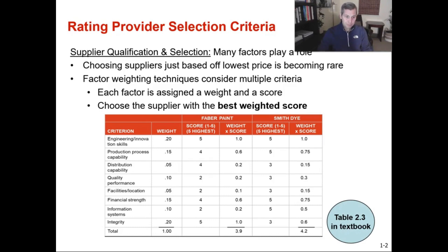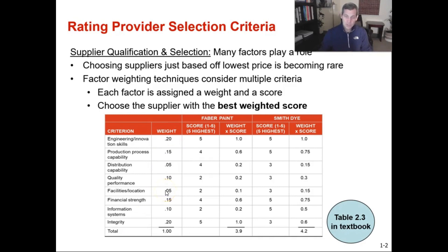We picked the criteria that was important to us on the far left, then we assigned a weighting determined by key stakeholders. Quality was the most important to them — as a health system, that's good. Cost came next, and then a couple of other factors. All of those weights add up to 100%. You put your criteria on the far left, your weight right next to that, and then you get a group of people together and determine a score for that supplier. Not everyone agrees, so we took a poll across the 15 key stakeholders who were making this decision.